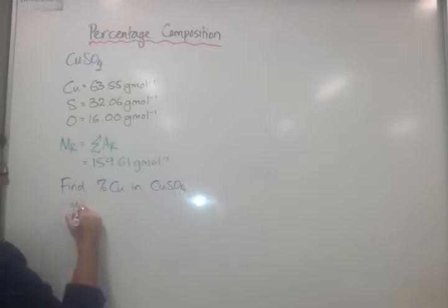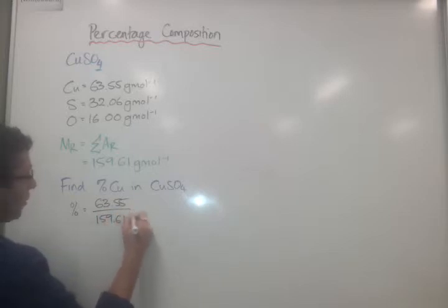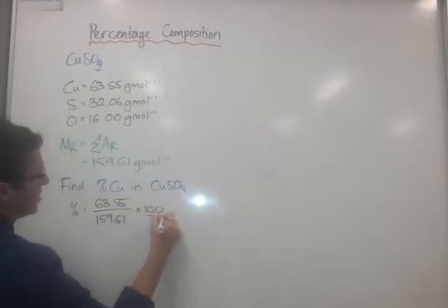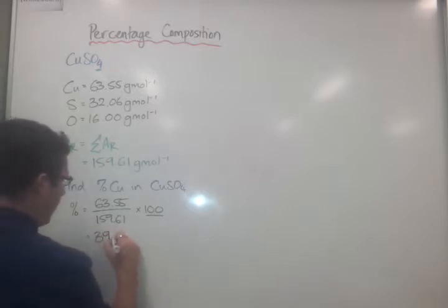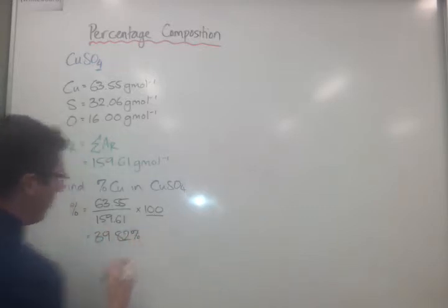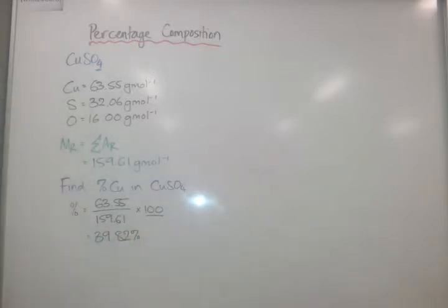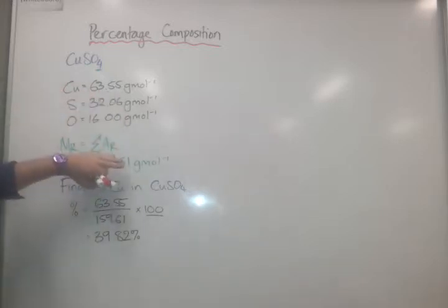So the percentage of copper equals 63.55 over 159.61 times 100 to get it into our percentage. And then I'm going to rely on you one of the people calculators. 39.82. And the thing I really like here is that if you notice, everything in here is given the four numbers. Ignore this one. Everything is given the four numbers. So we are limited to four significant figures.